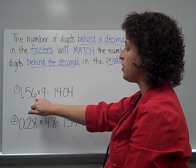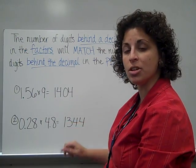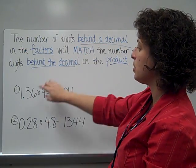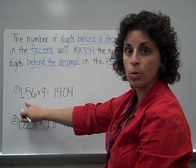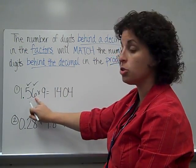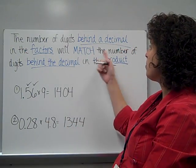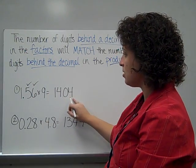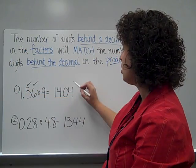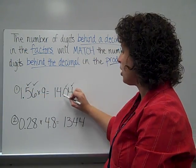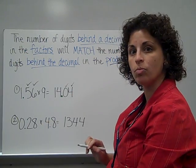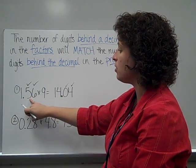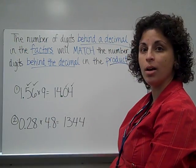Right here, I have one and fifty-six hundredths times nine, and it's going to equal these digits, but it needs a decimal. The factors are the numbers that we're multiplying together. I'm looking and I see two digits behind a decimal. It's supposed to match the number of digits behind the decimal in the product. So, two of these digits — starting at the back of the number — are going to have to be behind a decimal. That tells me my decimal belongs here, which means one and fifty-six hundredths times nine is fourteen and four hundredths.